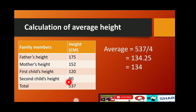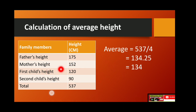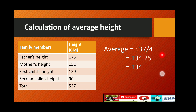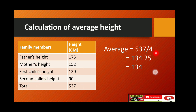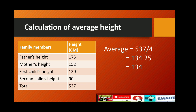Now let us calculate the average. Average is equal to the total height of all family members — 537 — divided by the total number of observations, which is 4 (father, mother, and two children). So average equals 537 divided by 4, which equals 134.25 centimeters. Therefore, the average height of his family is approximately 134 centimeters.